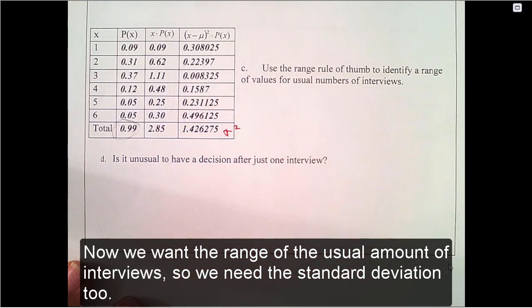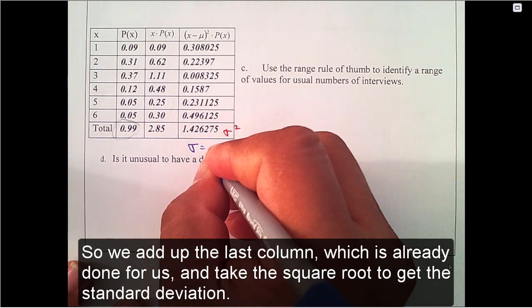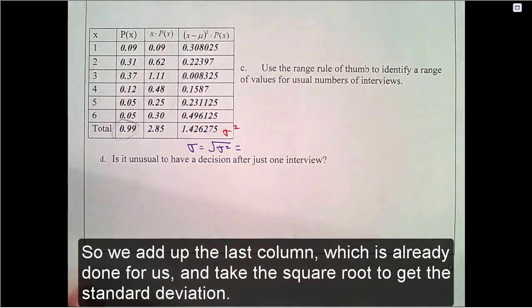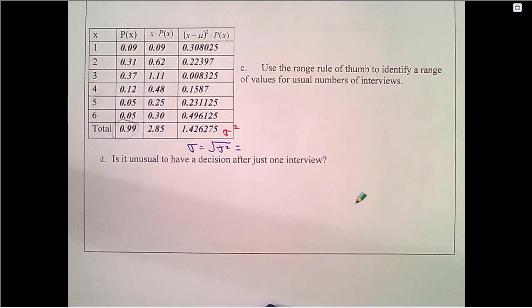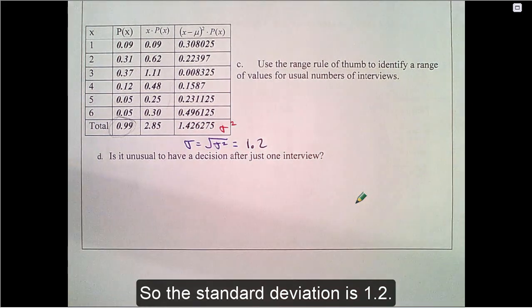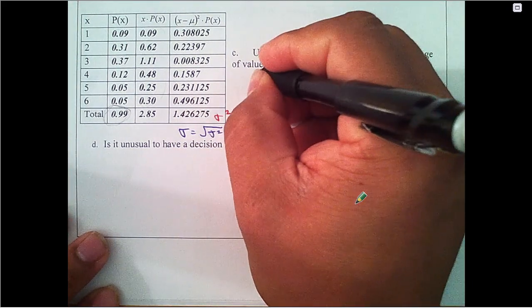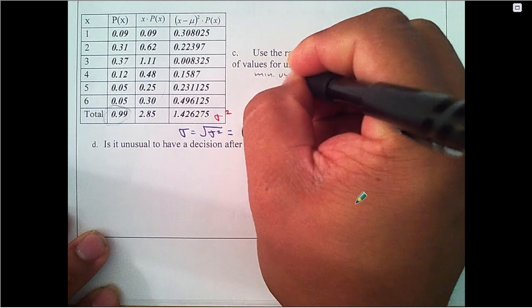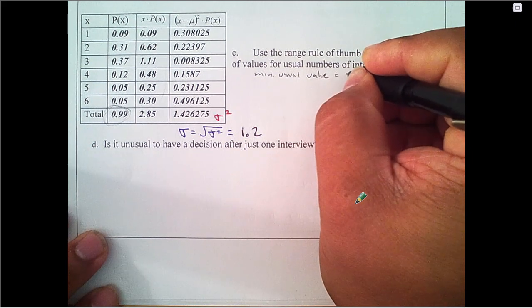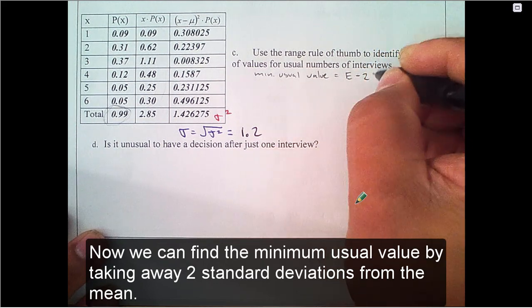Now we want the range of usual amount of interviews. So we need the standard deviation too. So we add up the last column, which is already done for us, and take the square root to get the standard deviation. So the standard deviation is 1.2.